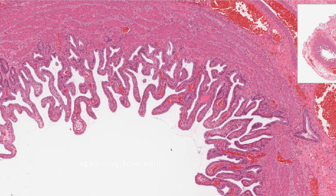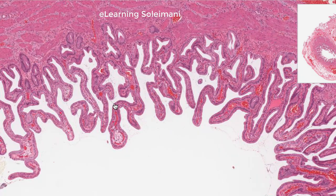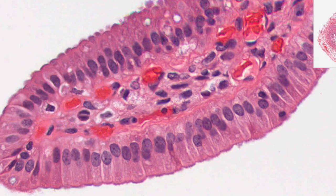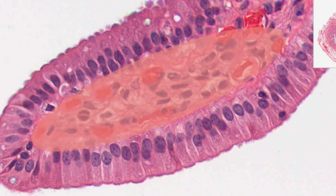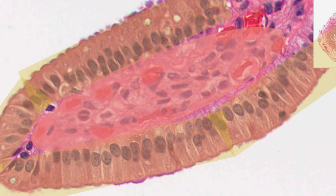This slide is gallbladder, which we use to describe loose connective tissue where the distribution of fibers and cells is uniform. With higher magnification, you can see loose connective tissue covered by epithelium.